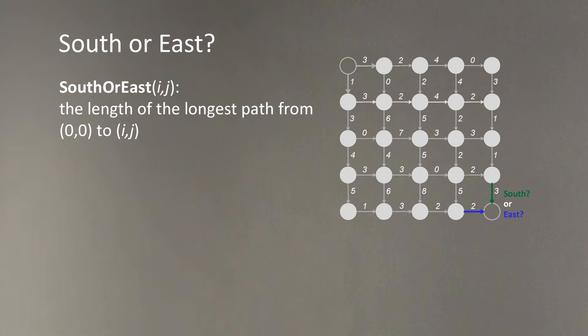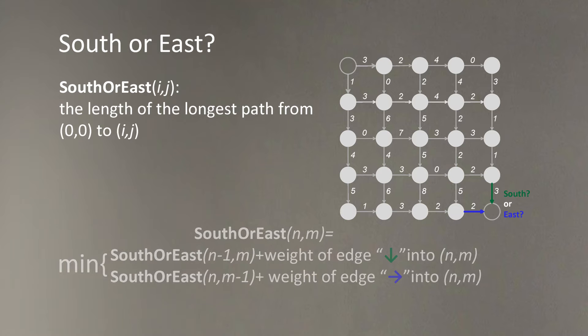And let's define a variable which is SouthOrEast(i,j) as the length of the longest path from the initial node, node (0,0), to node (i,j) in the grid.